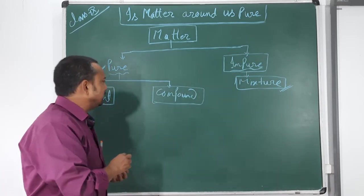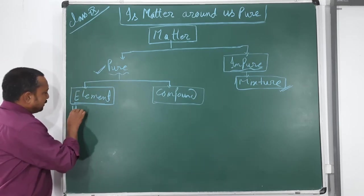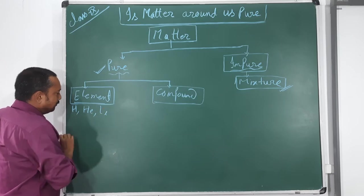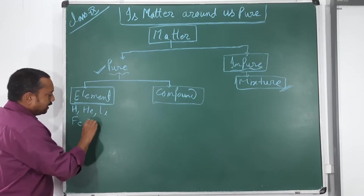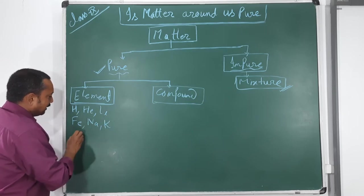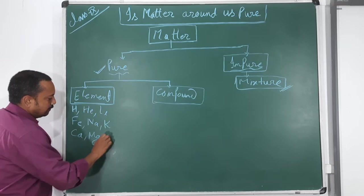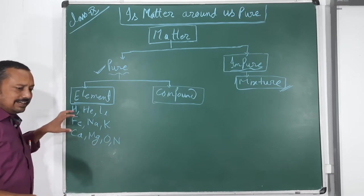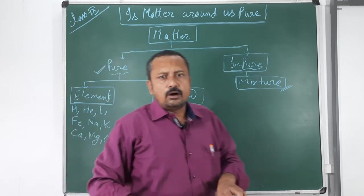Elements are represented by their symbols. Hydrogen is represented by H, helium by He, lithium by Li, iron by Fe, sodium by Na, potassium by K, calcium by Ca, magnesium by Mg, oxygen by O, and nitrogen by N. These elements are the simplest materials of our universe.